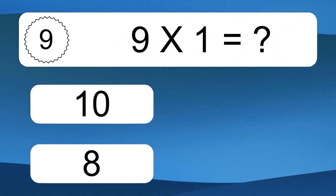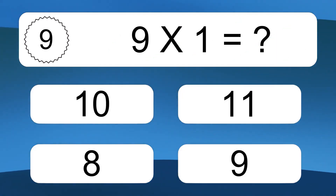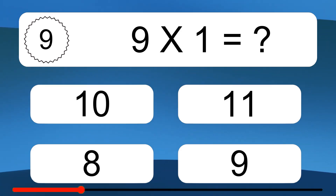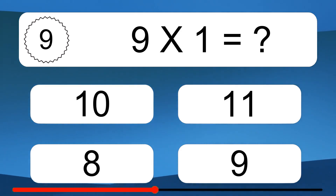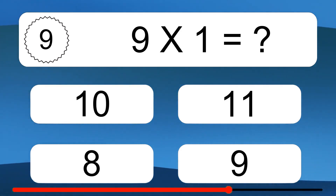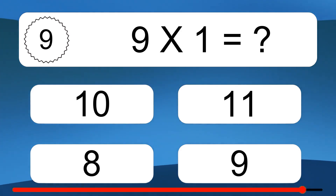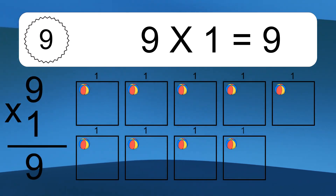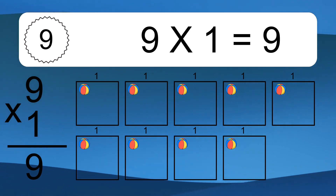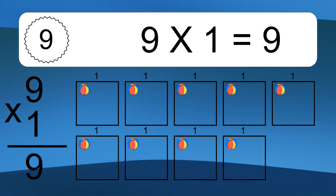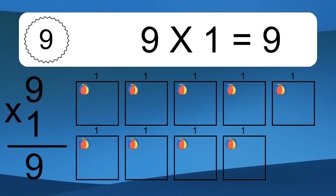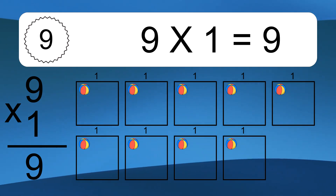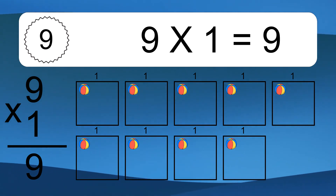9 times 1 equals what? 9 times 1 equals 9. We have 9 boxes, and each box has 1 colorful ball inside. If you count all the balls in all the boxes together, you will have 9 times 1 balls. This equals 9 balls.